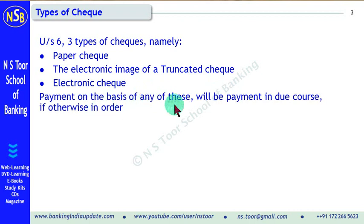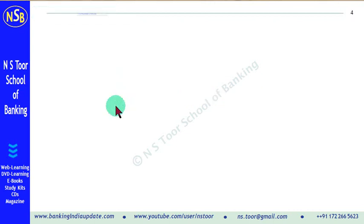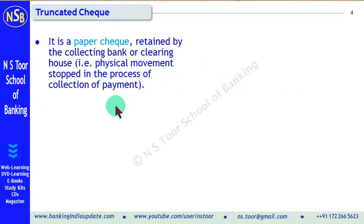Payment on the basis of any of these checks will be considered as a payment in due course, if otherwise in order. So payment can be made by banks on the basis of paper checks, on the basis of truncated checks, and on the basis of electronic checks. In law, all these 3 types of checks are equal.